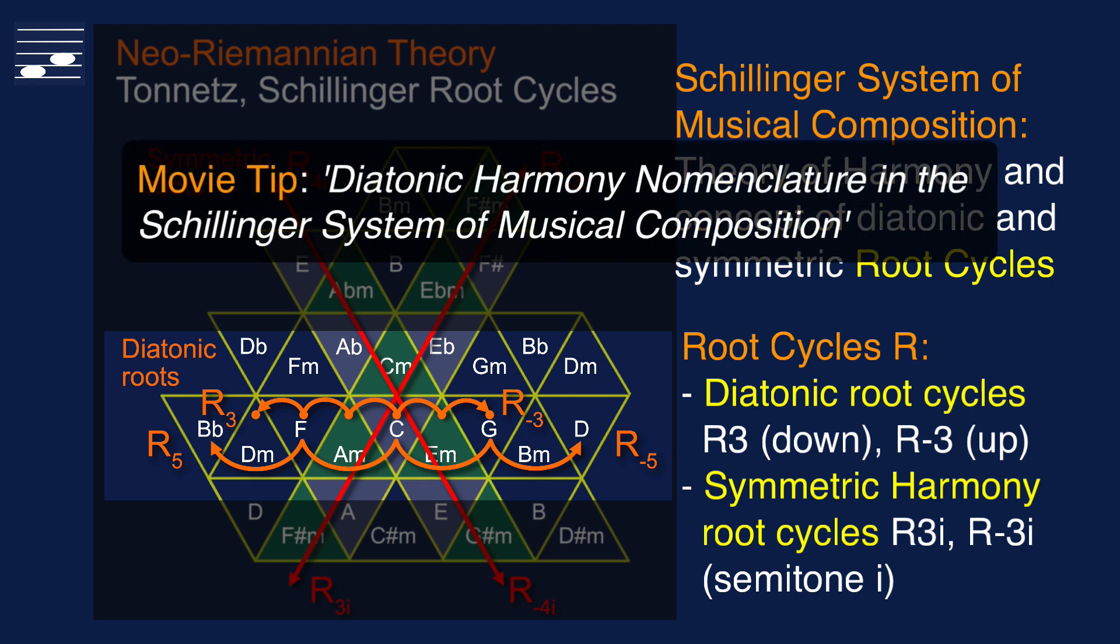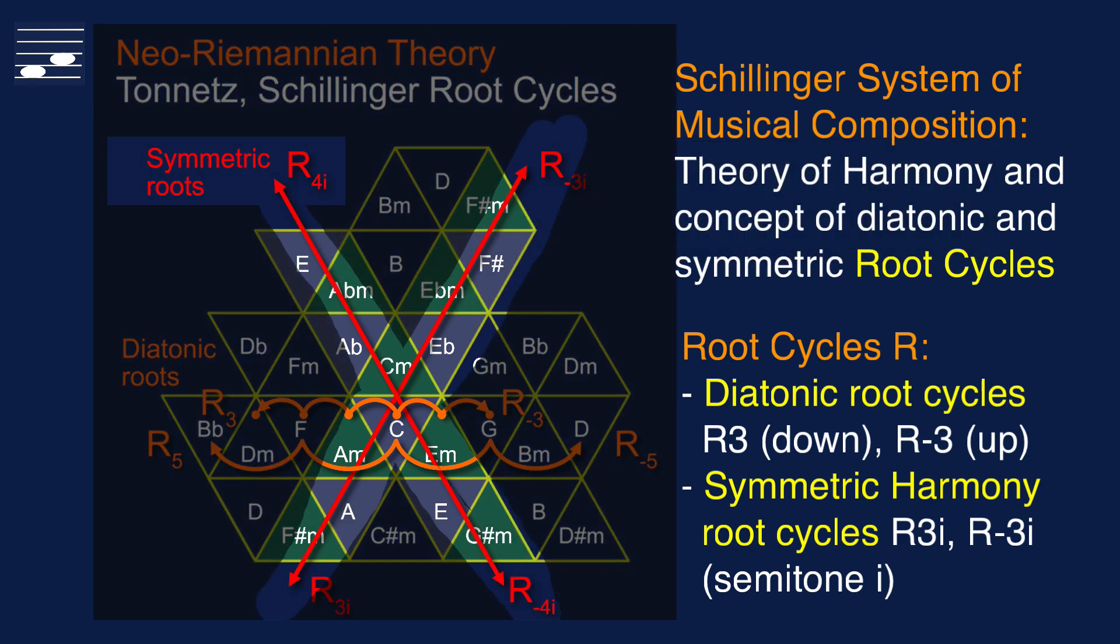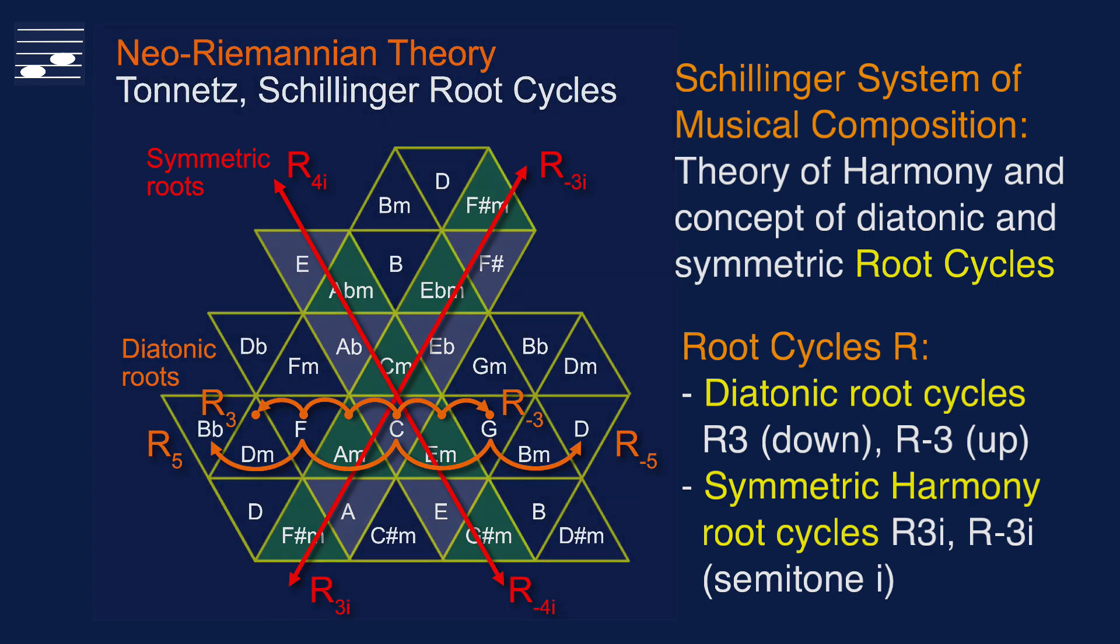as either positive root cycles R3 and R5 moving to the left into the subdominant direction, or as negative root cycles when moving in the opposite direction towards the dominant. Chord progressions involving chromatic medians correspond to the diagonal red arrows that depict symmetric system root movement of three or four semitones up or down.